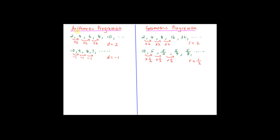Now it's pretty clear what arithmetic progression and geometric progression are. Generally for arithmetic progression, you either add or subtract a number from the previous term, and d is your common difference. But for geometric progression, you are going to multiply a number from the previous term. The number can be more than 1, less than 1, or even a negative number, and r is your common ratio.